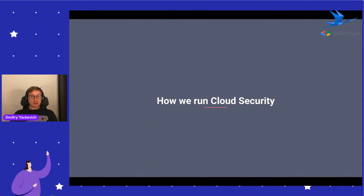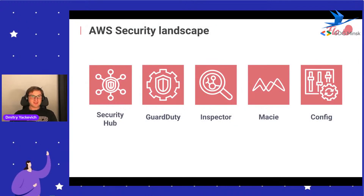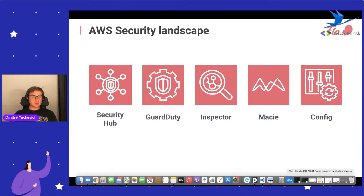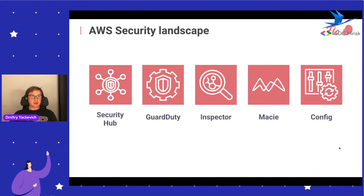Let's talk a bit about cloud security and how it looks from a landscape perspective. We use Amazon as our cloud provider. In Amazon, security tooling is quite straightforward. First, there is a central place to collect all information about compliance called Security Hub. Amazon also has GuardDuty - a cloud-related SIEM tool that monitors all events and alerts if something goes wrong, like a user trying to access a non-existing API or a tool trying to open the wrong port.